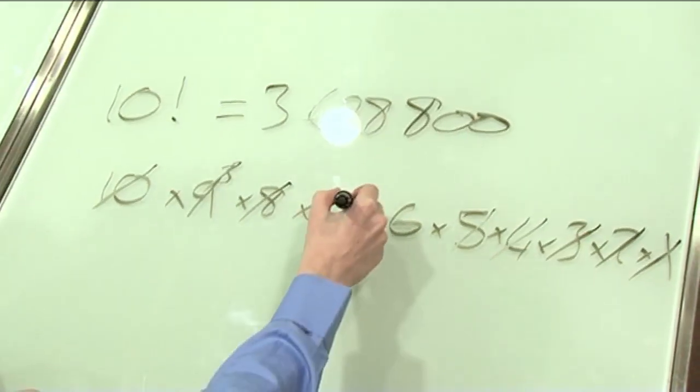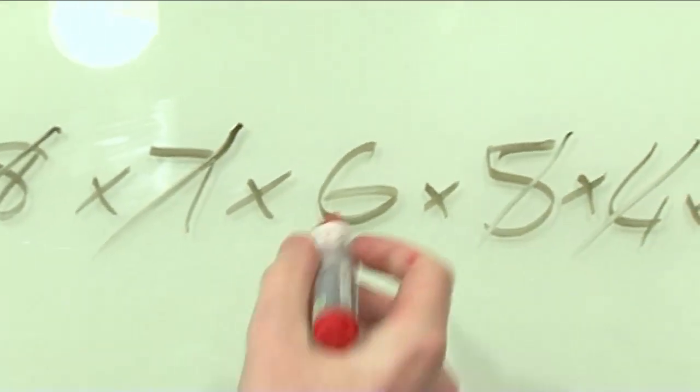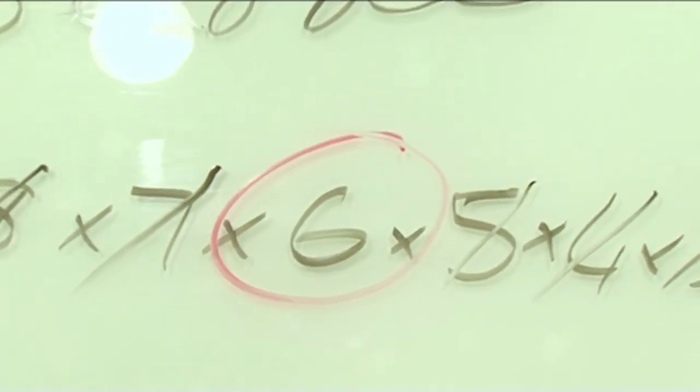There are 7 days in a week. I want to divide by 7. That's how many weeks it is. How many weeks is it? What's left? 6. There are exactly 6 weeks for 10 factorial seconds.